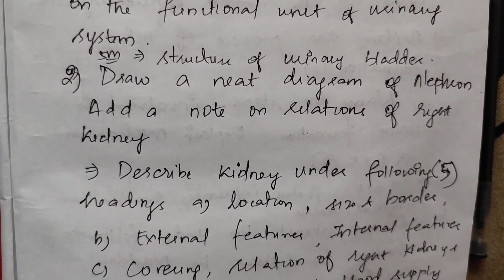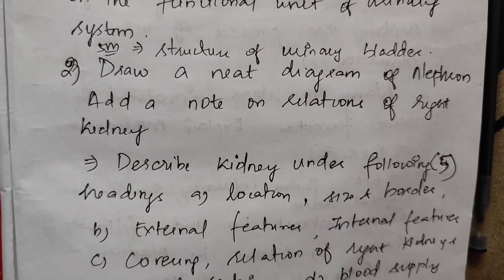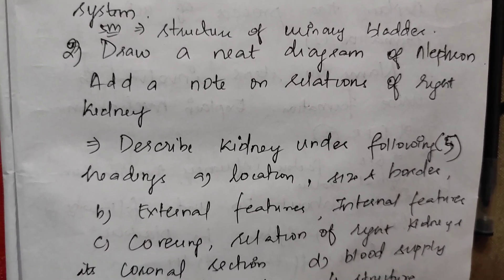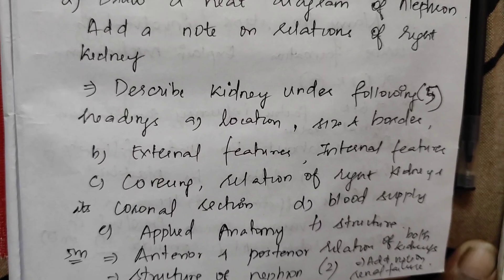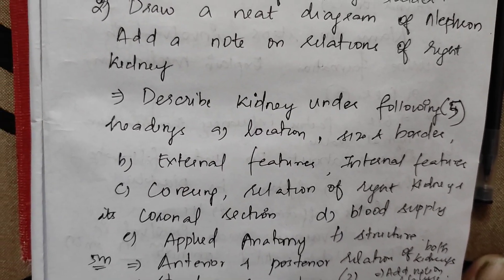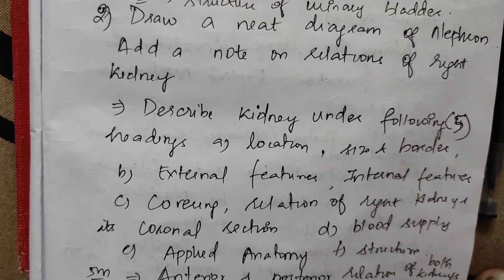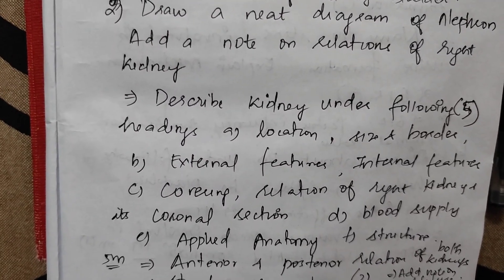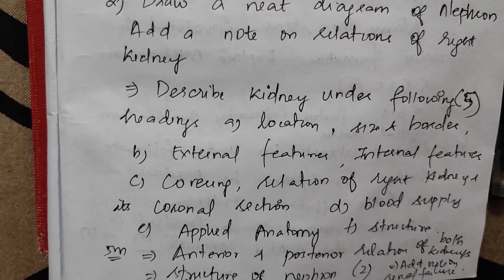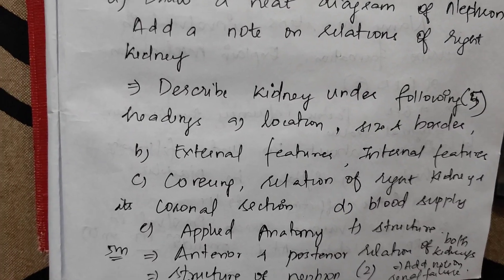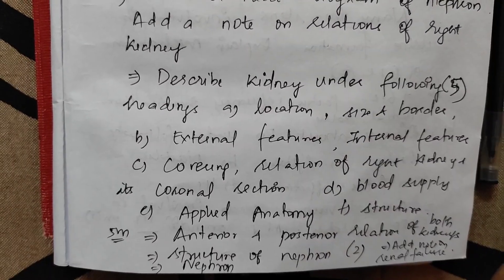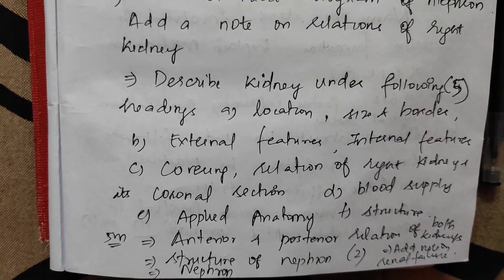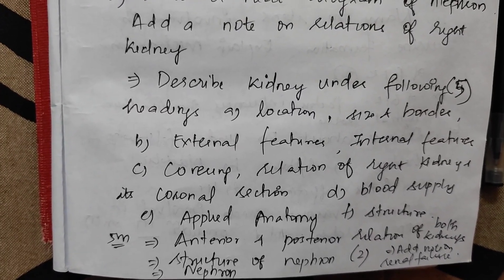Second, draw a neat diagram of the nephron and add a note on the relation of the right kidney. Next, describe the kidney under the following headings — there are overall 5 times. The subheadings include: location, size and border, external features, internal features, covering relation of the right kidney and its coronal section.